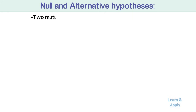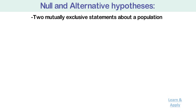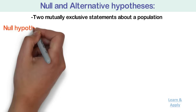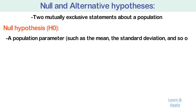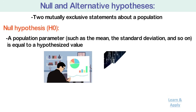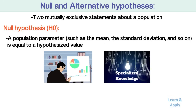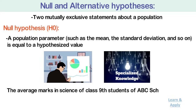The Null and Alternative Hypothesis are two mutually exclusive statements about a population. A hypothesis test uses sample data to determine whether to reject the null hypothesis. The null hypothesis, denoted by H0, states that a population parameter — such as the mean, the standard deviation, and so on — is equal to a hypothesized value. The null hypothesis is often an initial claim based on previous analysis or specialized knowledge. In the above example, the null hypothesis is that the average marks in science of class 9 students of ABC school are 85.